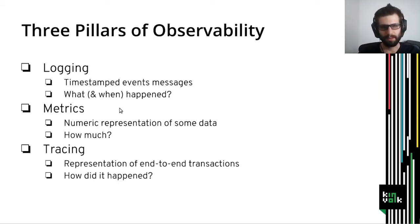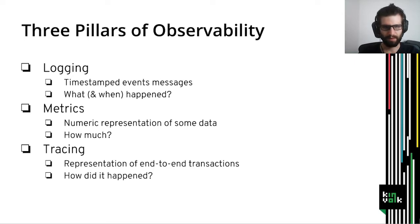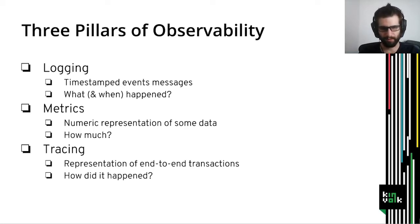Observability is traditionally based on three different pillars: logging, metrics, and tracing. Logging is a series of timestamped event messages. The most typical example is that we have a server and the server generates a file with the events that are happening and when those events happen. With logging we are able to answer the question: what and when did something happen? This is the more traditional way of performing debugging.